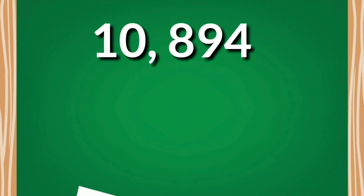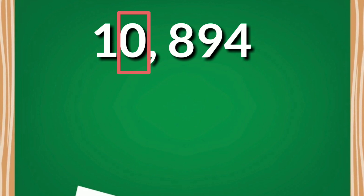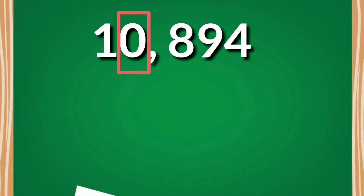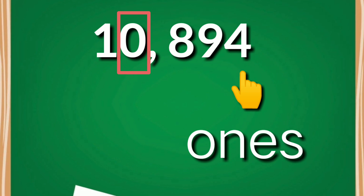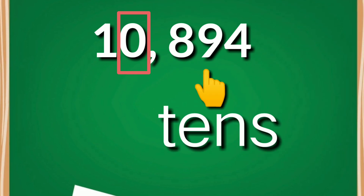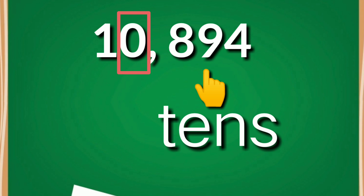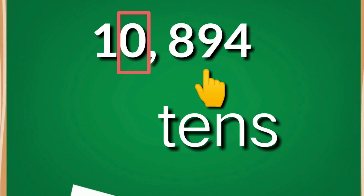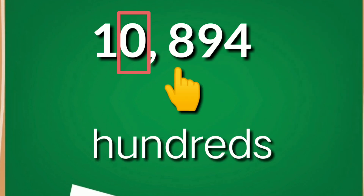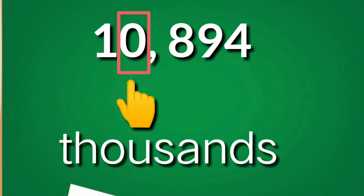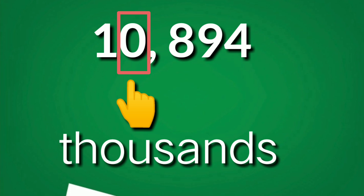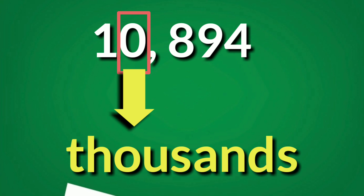Next, we have ten thousand, eight hundred ninety-four, and the boxed digit is zero. From the rightmost digit: four is ones, nine is tens, eight is hundreds, and zero is thousands. So the place value of zero in 10,894 is thousands.